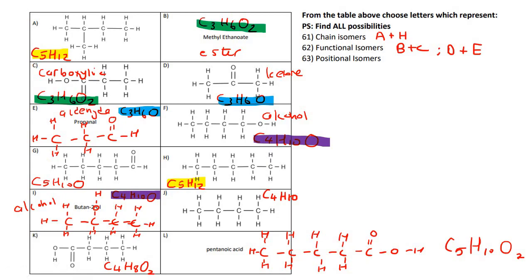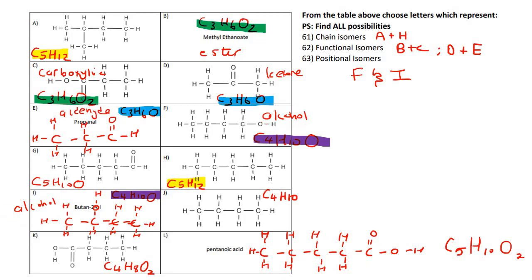Positional isomers would be F and I. The reason is that the chain is the same, so they are not chain isomers. They are both alcohols, so they can't be functional isomers, but it's the position of the alcohol that is different. Here the OH is on carbon number one, and here the OH is on carbon number two. So that position is different — that's why they are called positional isomers.